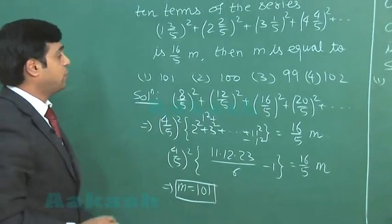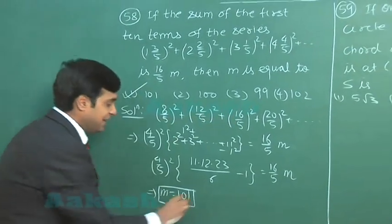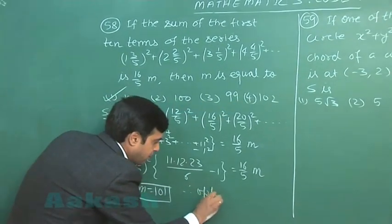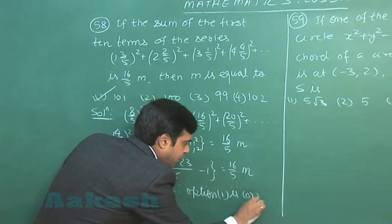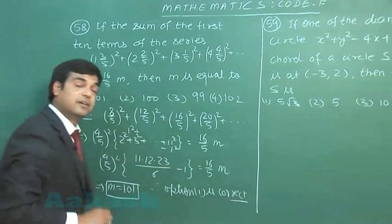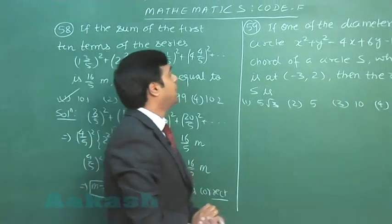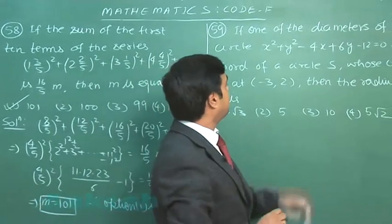So this is clear. So from the given options, option 1 is correct. Let us move to the next one. If one of the diameters of the circle, the given one,